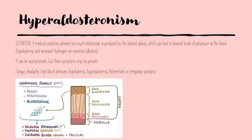The next disease is hyperaldosteronism — a condition in which too much aldosterone is produced by the adrenal glands, leading to low levels of potassium in the blood. Where previously we had hyperkalemia because of too little aldosterone, here we have too much aldosterone, so we have hypokalemia. Because of this hypokalemia, there is increased excretion of hydrogen ions leading to alkalosis. It is typically asymptomatic but when severe, additional symptoms are present.